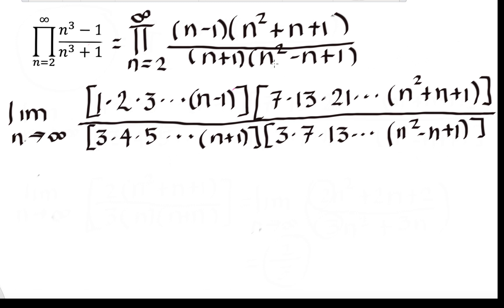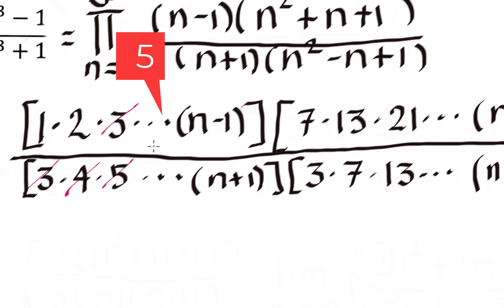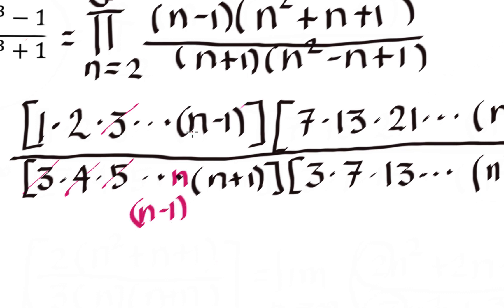This is our expansion of the infinite product. Now let's see what we can cancel. Notice that the 3 in the numerator and the 3 in the denominator are the same, so we cancel them out. There is a 4 that also cancels, and a 5 as well. Before n plus 1 there should be an n, and before n there should be an n minus 1.